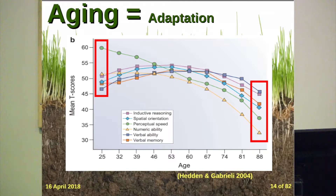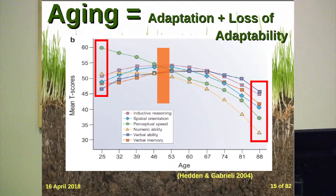Aging is sort of like an adaptive process in that we use our flexibility to adapt crystallized, cultural, reliable knowledge. But it also represents a loss of adaptability. We adapt with age but we lose the ability to adapt. We become better adapted but less able to adapt.